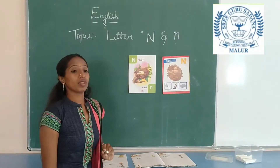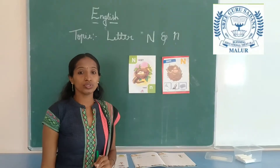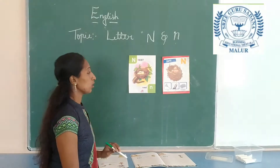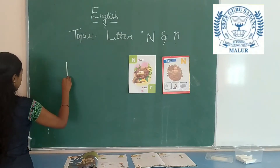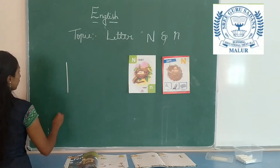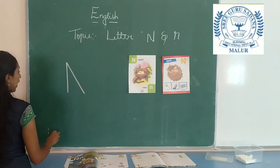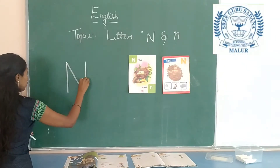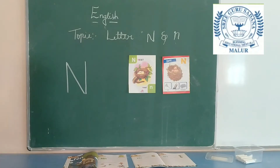Next, I will show you how to write letter N. Look at the board, children. First you have to make one standing line, another one slanting line, next one standing line. This is capital letter N.